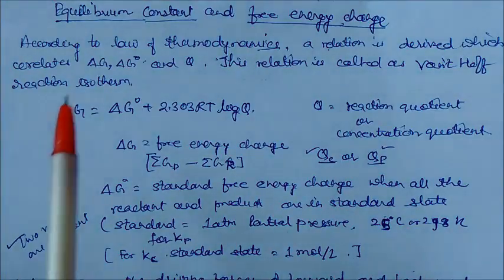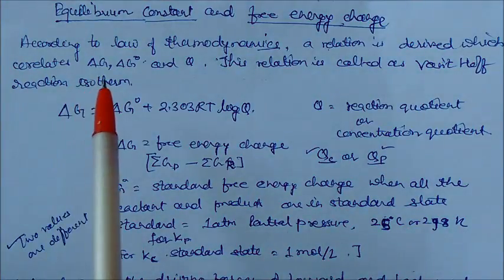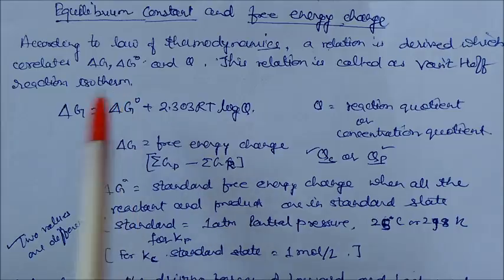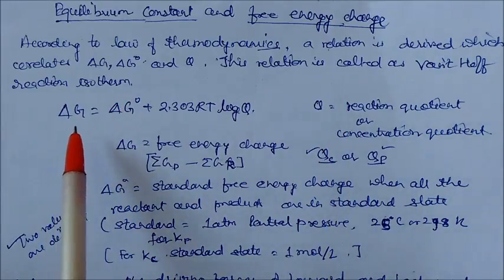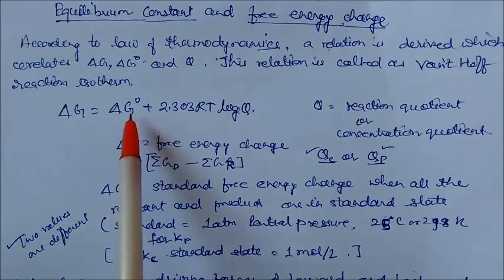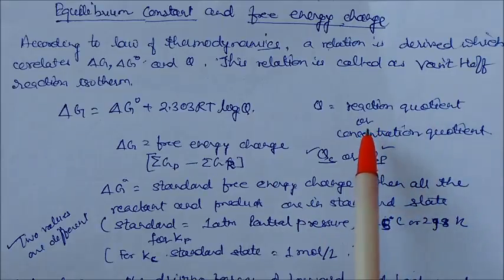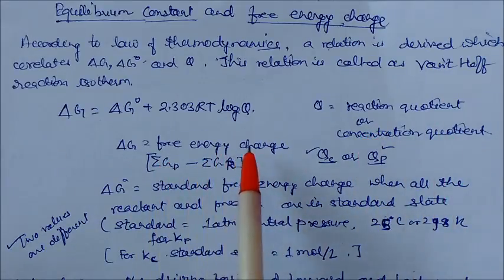Today, in this lecture, we will see this relation, called the van't Hoff reaction isotherm. This relation is written as: delta G is equal to delta G° plus 2.303RT log Q, where Q is the reaction quotient and delta G is the free energy change.